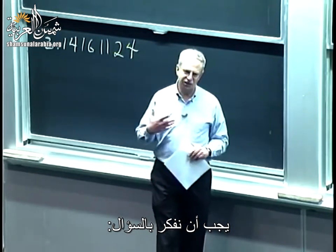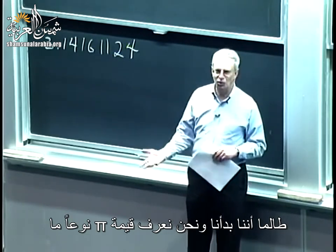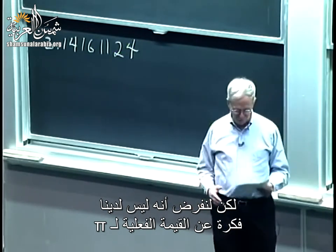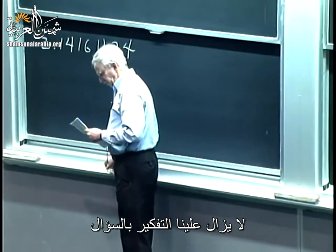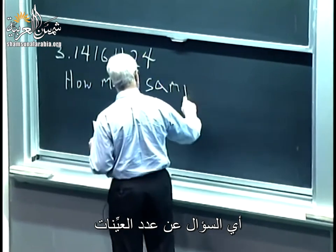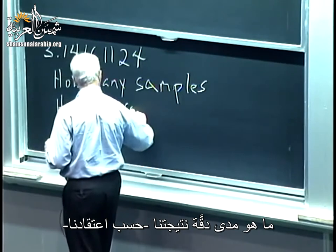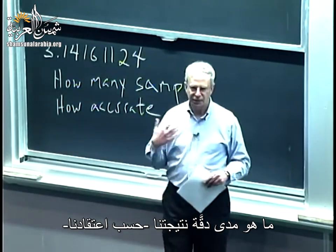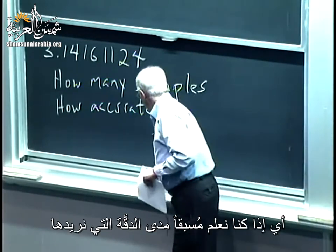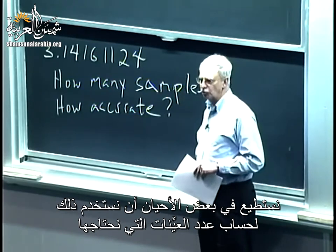We do have to think about the question of how many samples we should run. Was a billion darts enough? Since we all started knowing what pi was, we could look at it and say, yeah, pretty good. But suppose we had no clue about the actual value of pi. We still have to think about how many samples, and also how accurate we believe our result is, given the number of samples. These two questions are closely related — if we know in advance how much accuracy we want, we can sometimes use that to calculate how many samples we need.